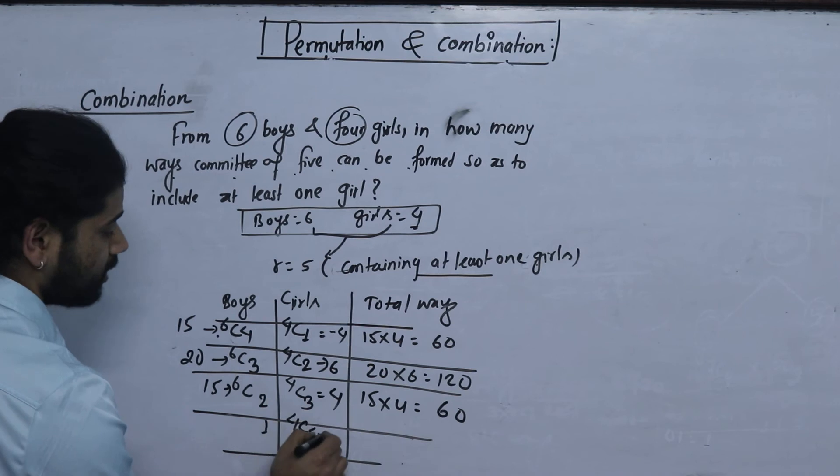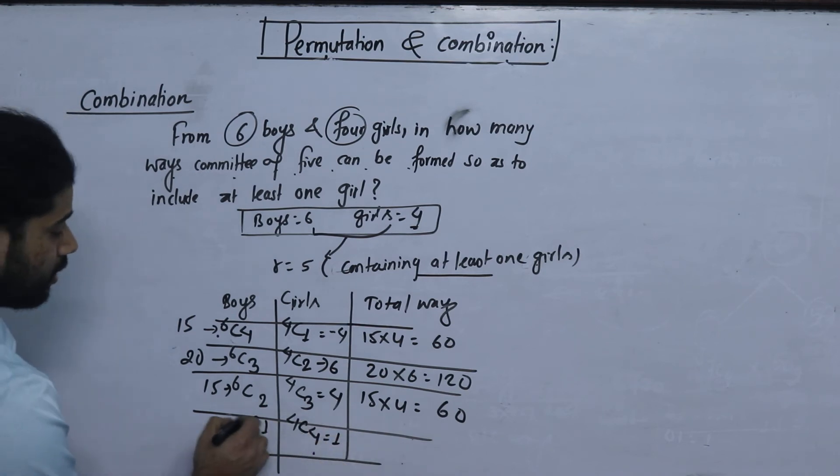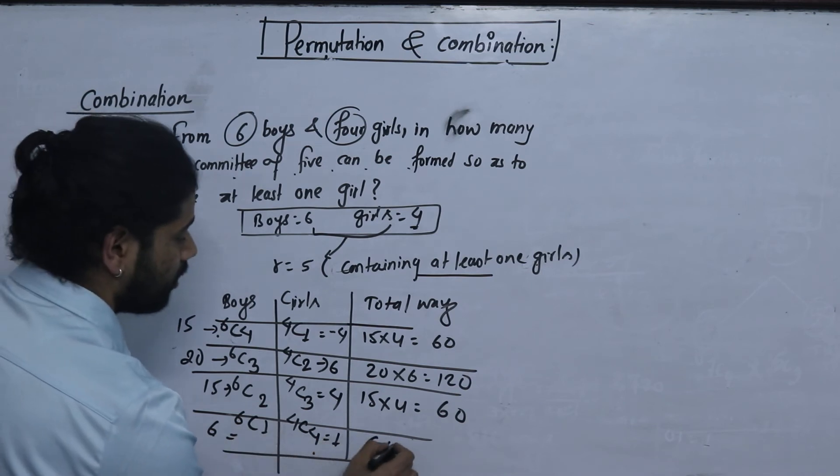So, if we have 4 girls, we have 4 girls. We have 4. And we have 6 boys. And we have 6 boys.